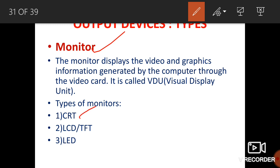Types of monitors include CRT, LCD, TFT, and LED. LCD means Liquid Crystal Display. CRT means Cathode Ray Tube — these were used in old televisions. TFT means Thin Film Transistor. LED means Light Emitting Diode.